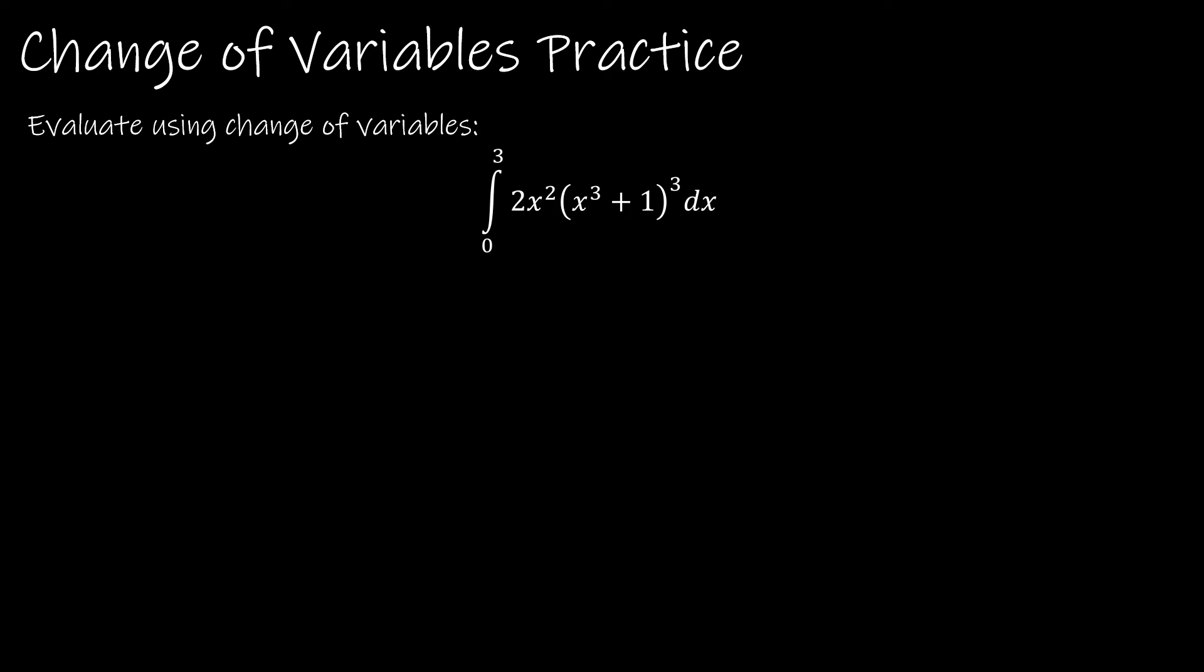All right, let's try this question again using change of variables. So we're going to practice by changing those limits of integration. My initial steps are the same. I find u to be the composite function or function within another function. So x cubed plus 1, this is going to be u. The du is the derivative of that, so just 3x squared include the dx. And then the extra step is we're going to go ahead and find those new limits of integration using the existing limits of integration. So u of 0 is 0 cubed plus 1, and u of 3 is 3 cubed plus 1, which is 28.